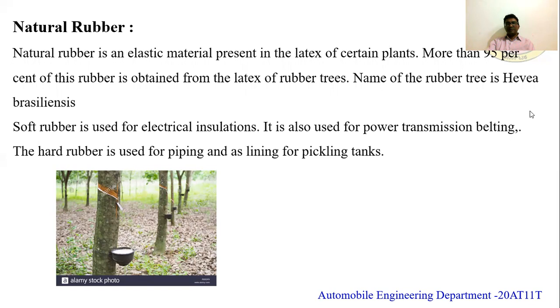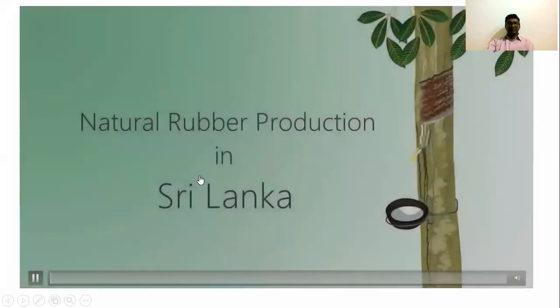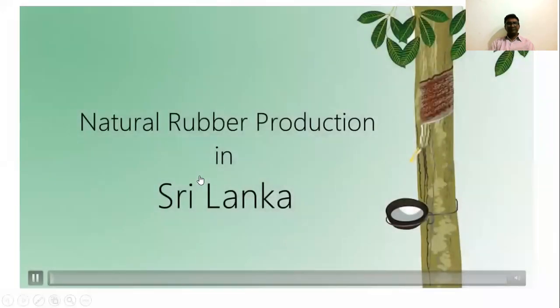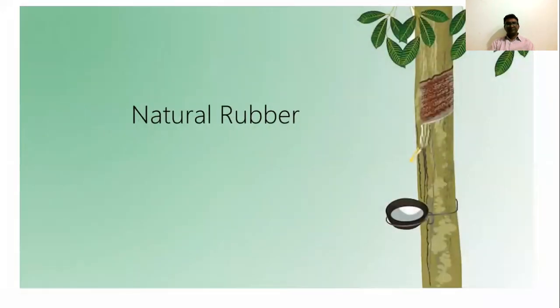Let me explain what latex means — I'll show you a short clip to help you understand. There are two major types of rubber: natural and synthetic. Natural rubber was first discovered in the Amazon in Brazil.